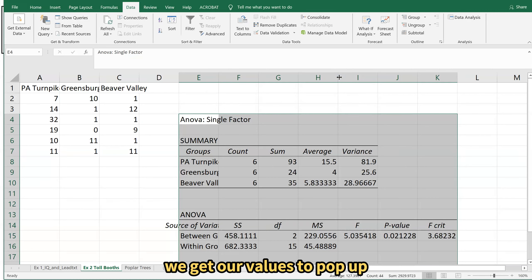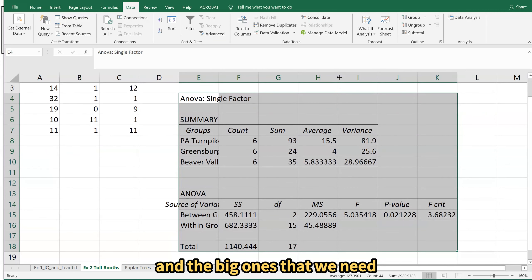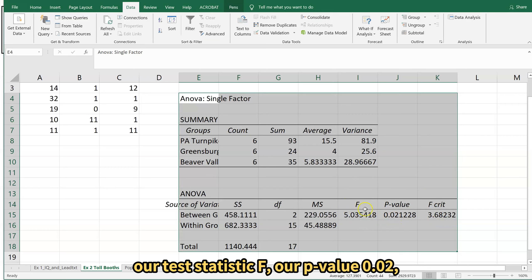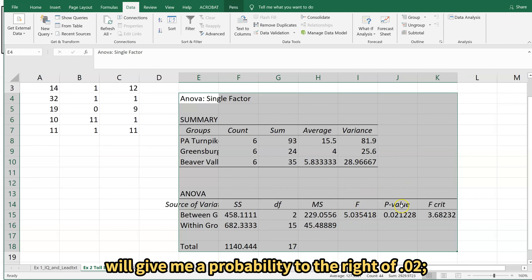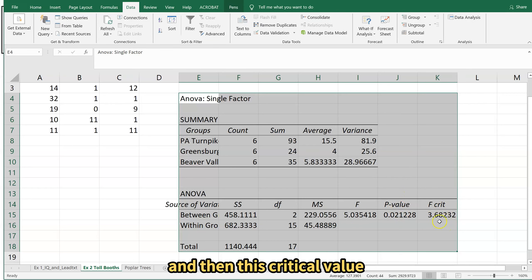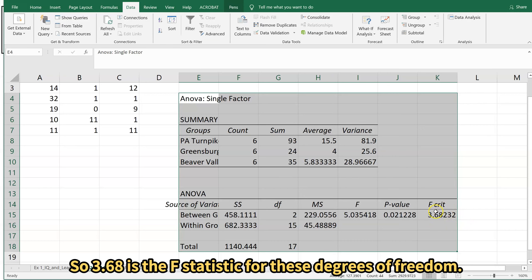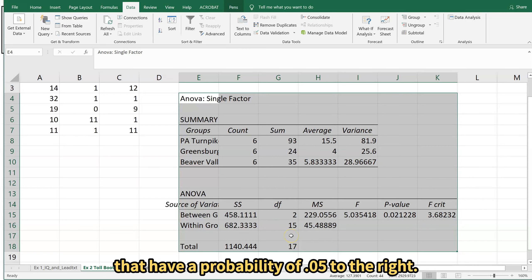In clicking OK we get our values to pop up for ANOVA and the big ones that we need are these three here on the right the bottom right corner. Our test statistic F, our p value 0.02. Remember that these two are related to each other. The F test statistic will give me a probability to the right of 0.02 and then this critical value 3.68 that's coming from alpha. So 3.68 is the F statistic for these degrees of freedom that have a probability of 0.05 to the right.